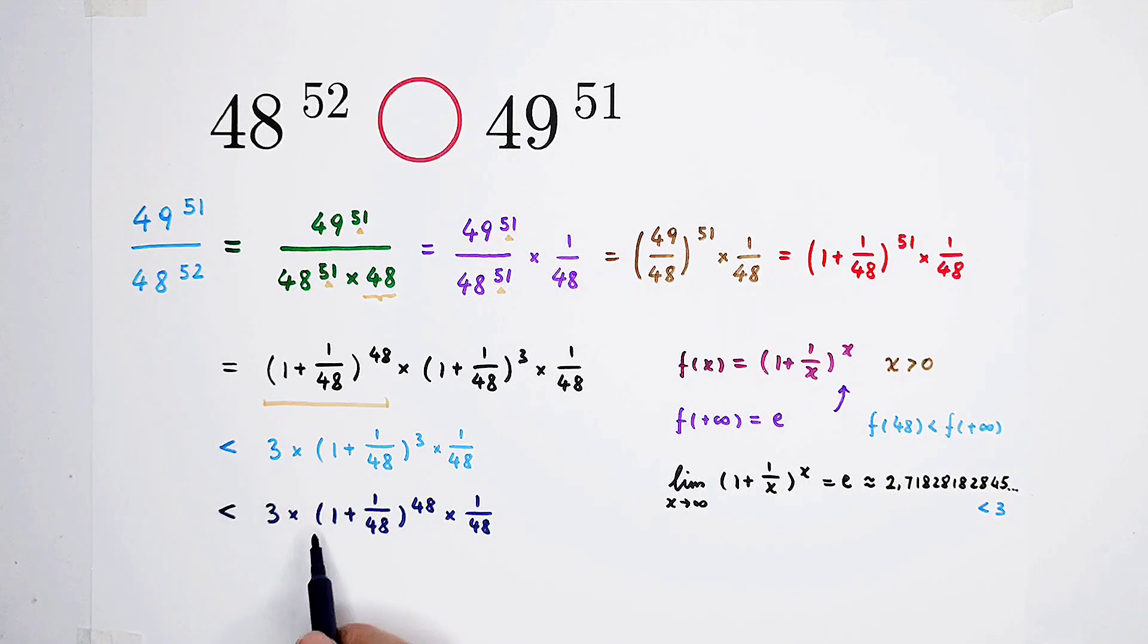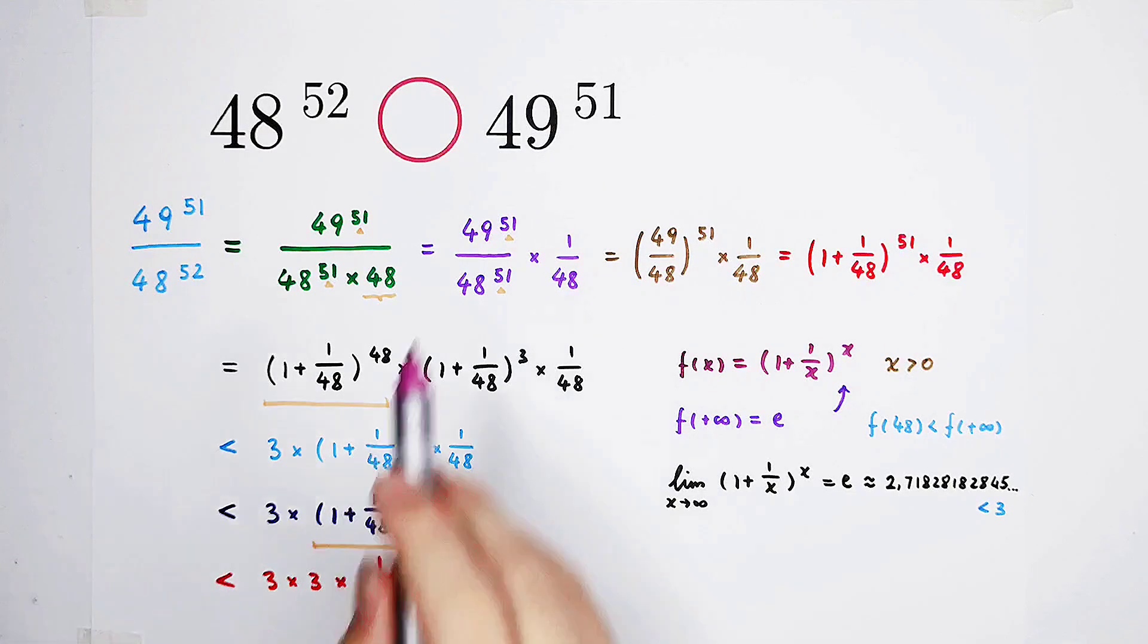So now, this one. Because we know that this is smaller than 3. We've even used it here. So it is, of course, smaller than 3 times 3 times 1 over 48. And it is more than 3 over 16. And 3 over 16 is, of course, smaller than 1.